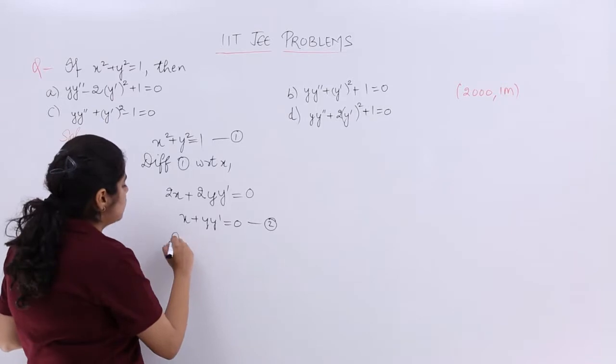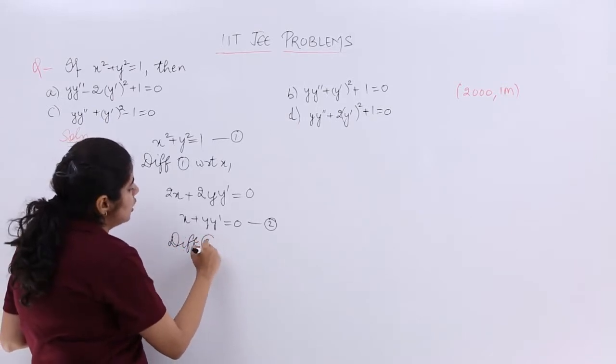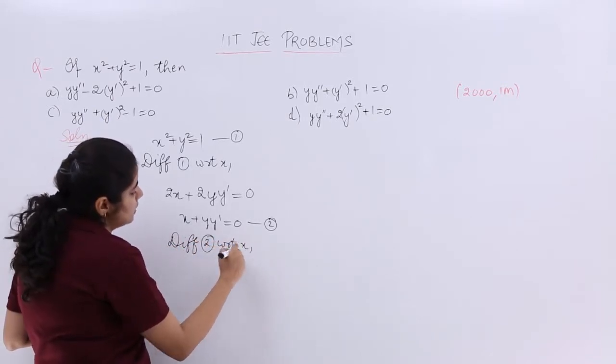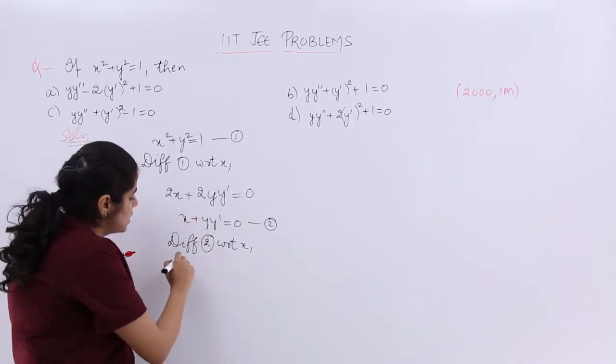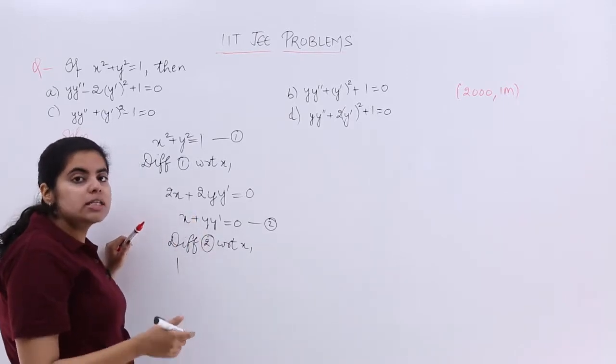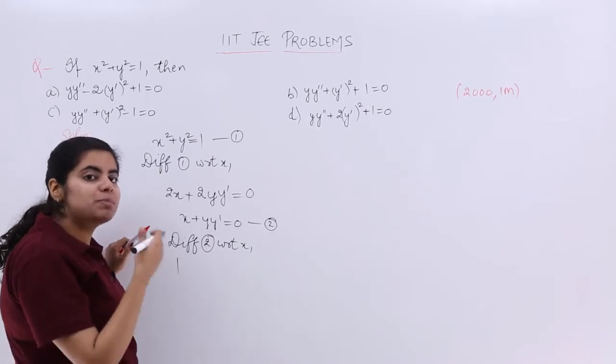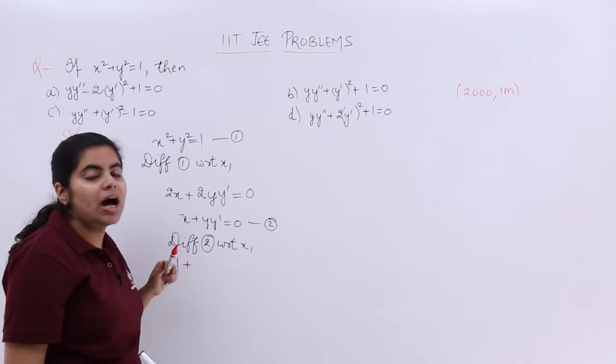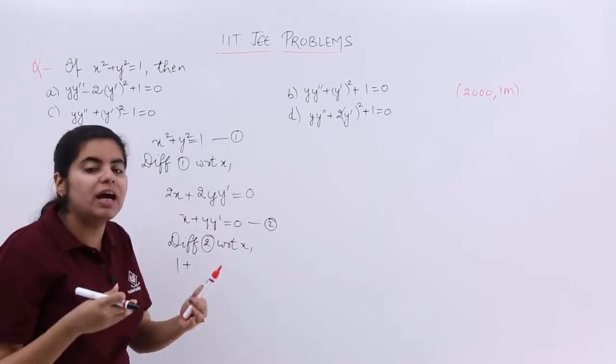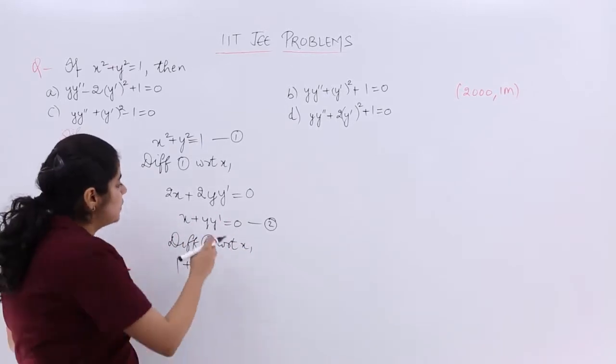Still any of the options does not match because the option also has y'' everywhere. So we have to again differentiate. So I write differentiating again equation 2 with respect to x. What does it become? x differentiation is 1, because the differentiation of a variable with respect to itself is 1. Then y and y' are the 2 different terms. We have to apply the product rule in case of differentiation.